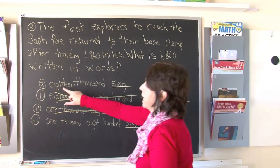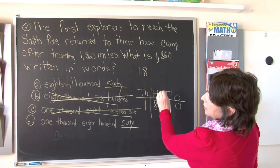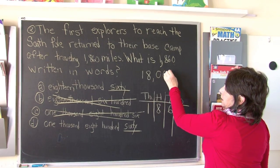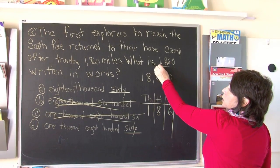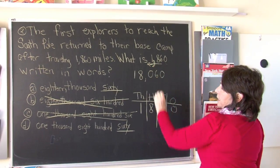So boys and girls, can it be 18,060? 18,000 and 60 would look like this. We do not have 18 thousands here. We have 1 thousand, only one place to the left of the comma.